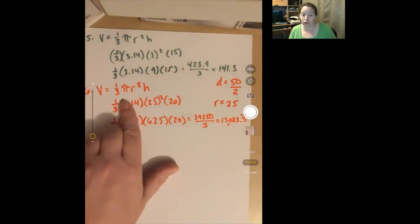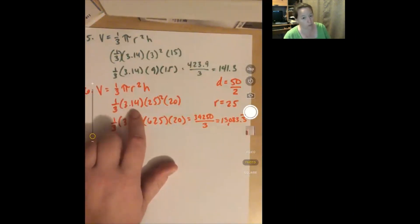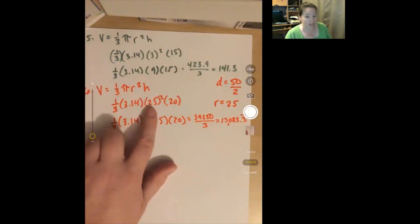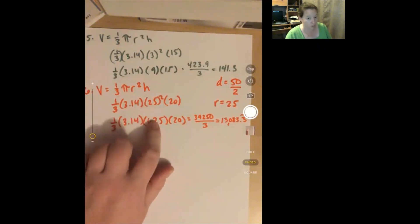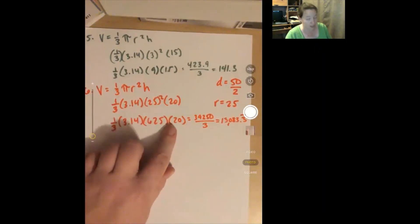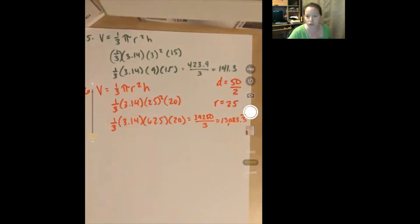Number seven: how would you find the volume of a cone? Volume equals one-third pi r squared h. In sentence form: substitute 3.14 for pi, square the radius, then multiply 3.14 times the squared radius times the height, then divide all of it by 3. That gives you the volume.